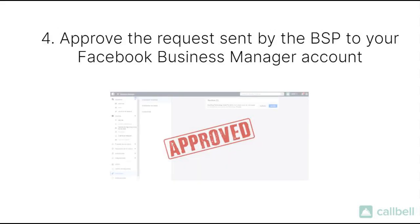At this point, our team will send over to WhatsApp a request to create your API account. In order to finalize this step, you will be required to approve a notification under the request section of your Facebook Business Manager account. The request will be sent by the BSP, or Business Solution Provider — the company that in partnership with Callbell and WhatsApp will take care of managing your account installed on the Business API.